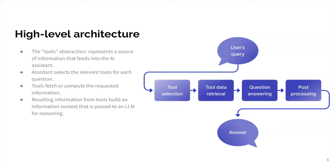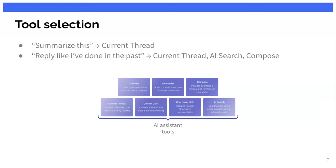We do a little bit of post-processing — like placing references and links into the answer, and some markdown processing during rendering time so it looks nicer. So what are these tools and what does tool selection mean? Right now we have about seven or eight different tools. We have a calendar tool that gives access to Google Calendar, a summarize tool that produces information-dense summaries on emails, a compose tool that writes emails mimicking the user's style very closely, and current thread and current draft tools that give access to whatever thread or draft the user has open on their screen.